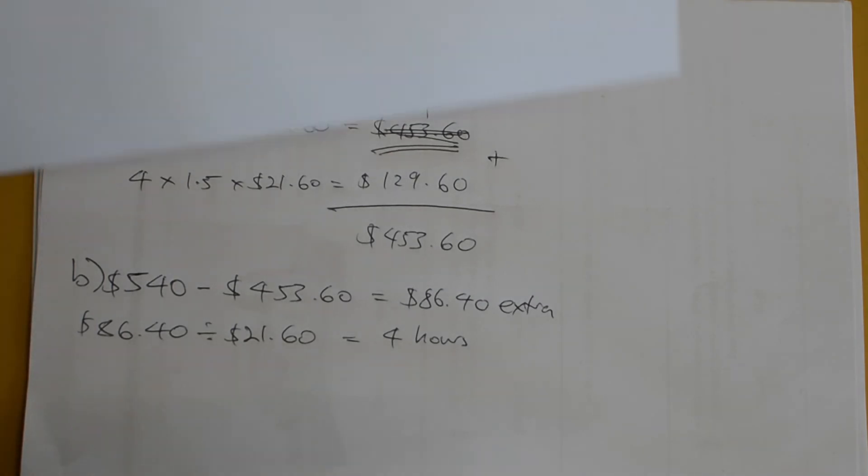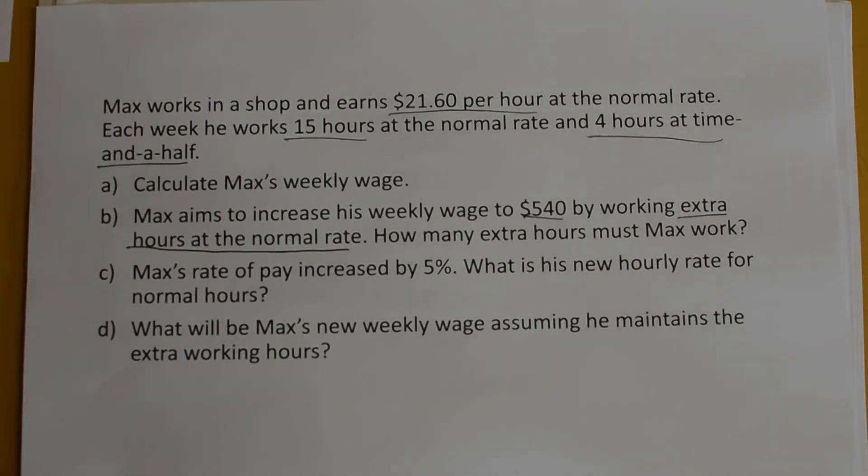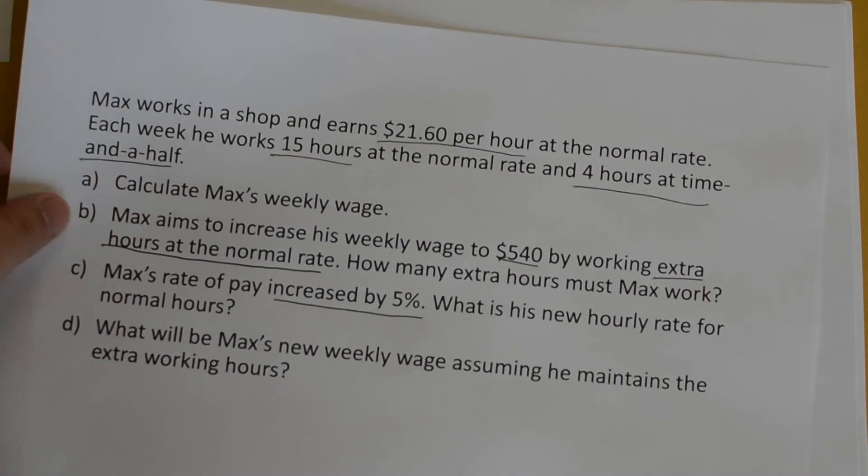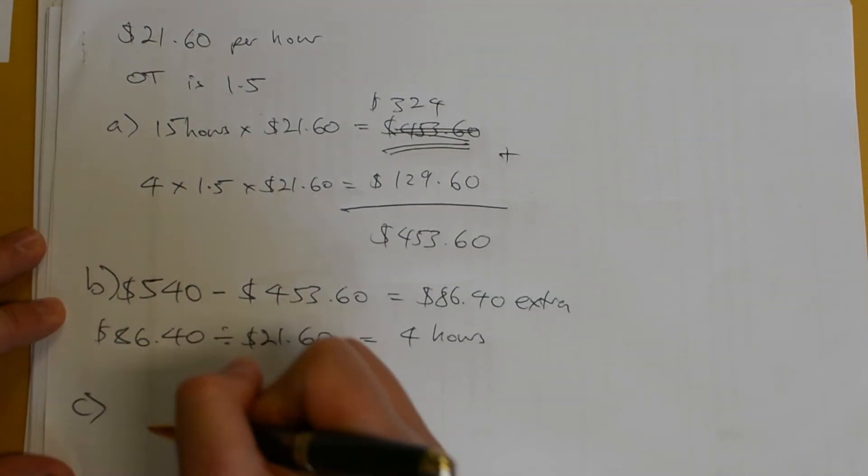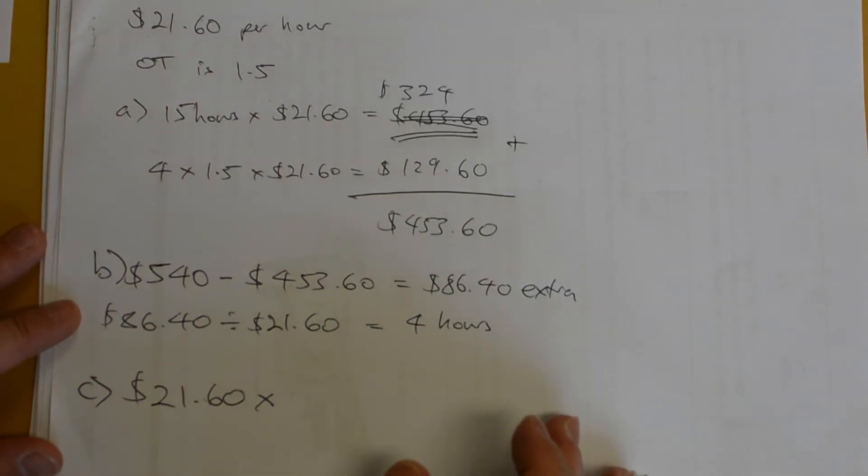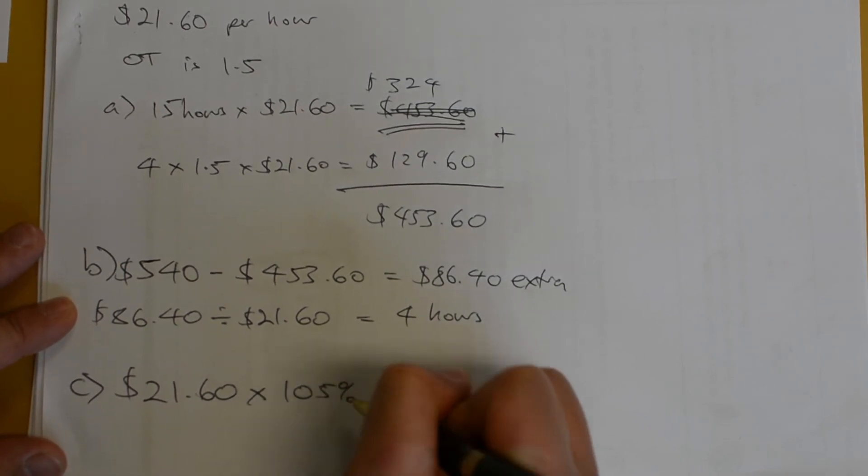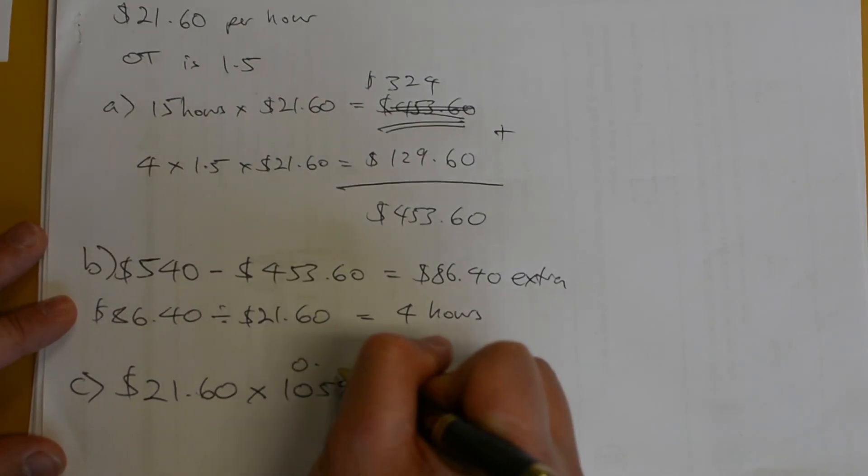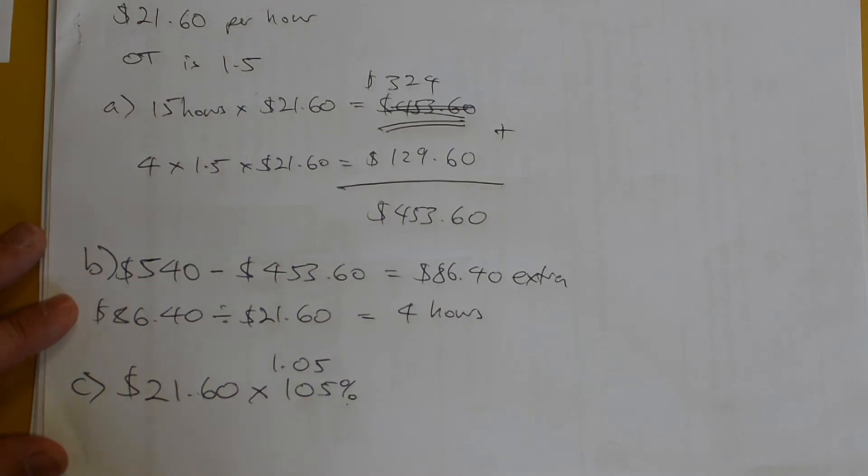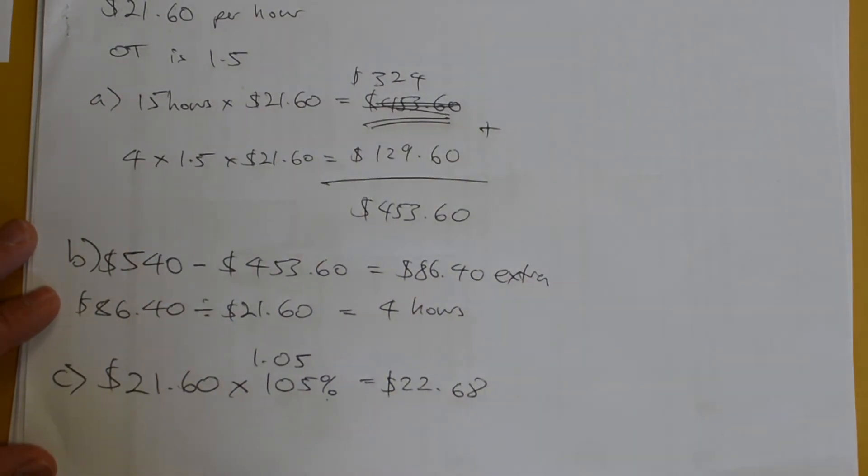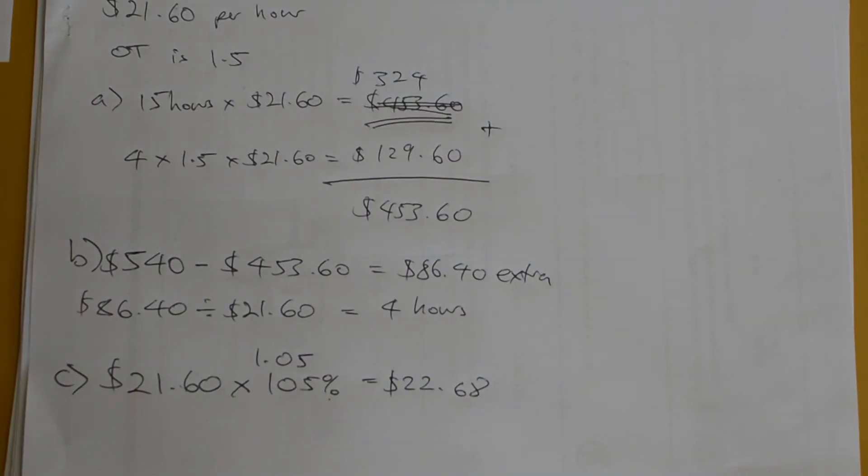So, that's how many extra hours he must work to earn $540. Now, moving on to part C. Max's rate of pay is increased by 5%. What is his new hourly rate for normal hours? Well, we must simply increase his rate by 5%. So, $21.60, and to increase by 5%, we need to multiply by 105%. Now, there is a percentage button on your calculator, or you can use 1.05. And doing this in your calculator, you should end up with $22.68. This is his new hourly rate for his normal hours.